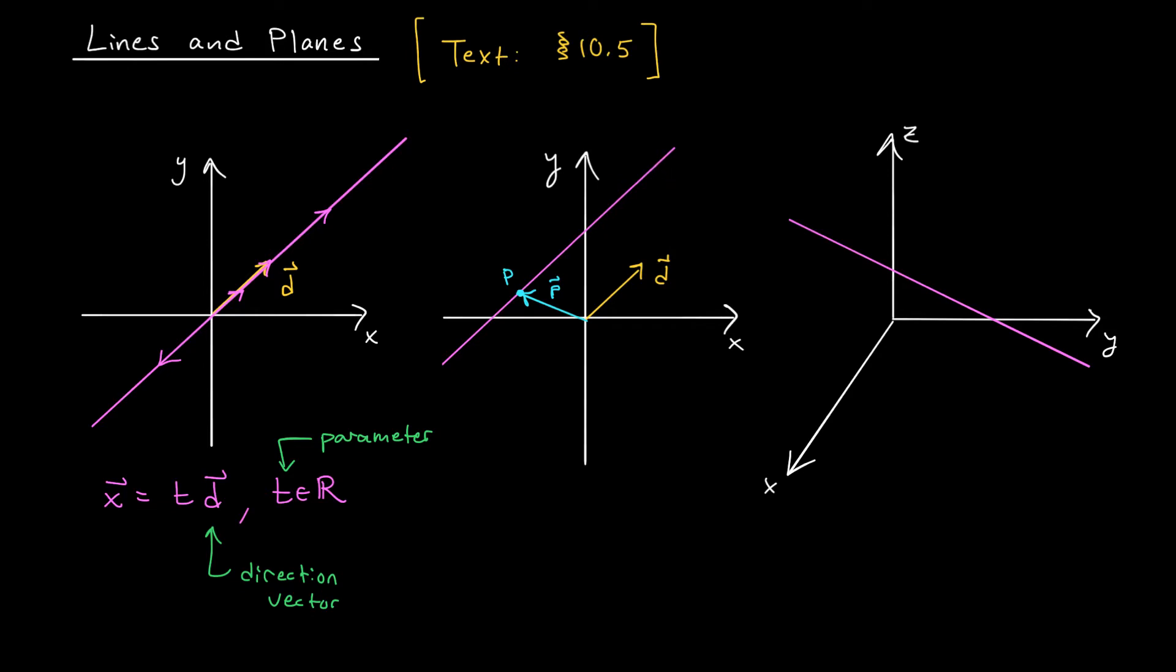The line will be parallel to the one we had before, but now it passes through P. The equation of our line is therefore the set of all vectors X of the form P plus T, D, where here again, T can be any real number you like. Now compare this with the equation of a line that you know from high school. Y equals MX plus B. In both cases, we have a slope or direction, and we have a point on the line. Pretty cool, huh?